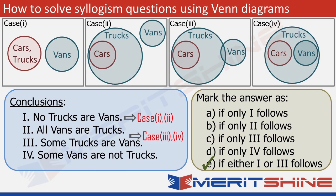That's how we solve syllogism questions using Venn diagrams. I explained this simple question in much detail because I wanted you to understand the concept. A question this simple can be done mentally, but we actually need Venn diagrams when questions are more complex, containing 4 or 5 sets. In the next tutorial, I'll pick up some difficult questions and discuss shortcuts. Make sure you've gone through the first two tutorials carefully. I'll see you soon. Goodbye.